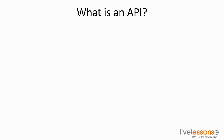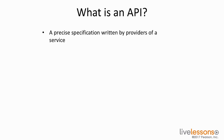You might be asking yourself, what is an API? An API is specifications or protocols of how to exchange information or request online services from an application, device, set of devices, or in some cases, even an organization.